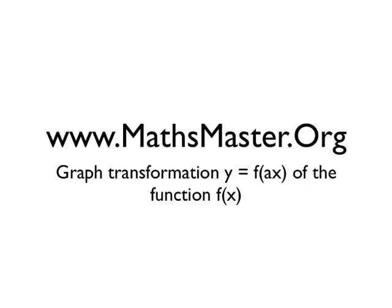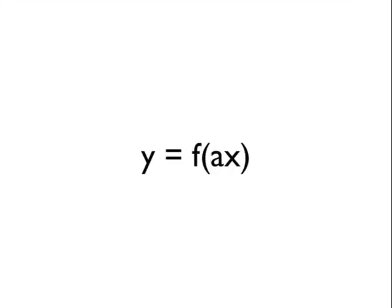Welcome to MathsMaster.org. We're going to look at the graph transformation y equals f of ax. We take a function of x and multiply a number — I'll use the letter 'a' — by x before we then evaluate the function. So we multiply the input to the function, x, by the number 'a' before we go and use that to evaluate the function.